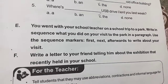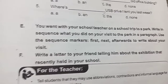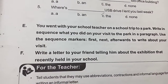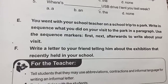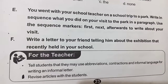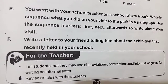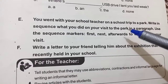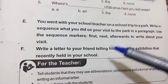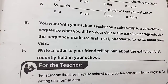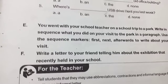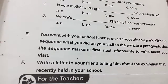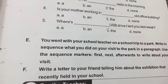Some composition activities are given in Part E. First, you went with your school teacher on a trip to a park — write a paragraph about what you did, using sequence markers like 'first,' 'next,' and 'onwards.' Second, write a letter to your friend telling him about an exhibition recently held in your school. These are two compositions you need to complete. I hope this exercise is quite clear to you — learn it very well. Take care of yourself, students.